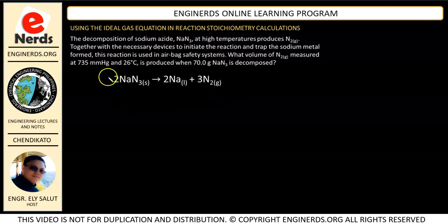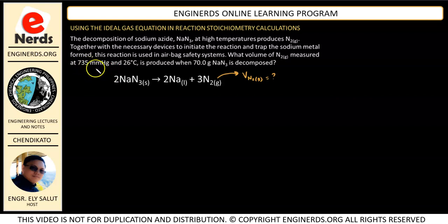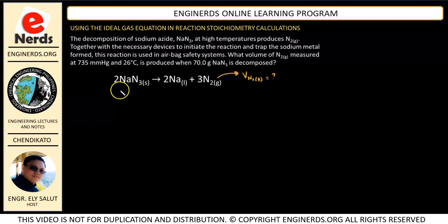We no longer need to balance the reaction, but that will be the first step you need to do before doing any calculation — make sure that your reaction is balanced. So our required is to find the volume of N2 gas. Our conditions are at 735 mmHg and 26 degrees Celsius, produced when 70 grams of NaN3 is decomposed. So our sodium azide is 70 grams — this is the amount that was decomposed.